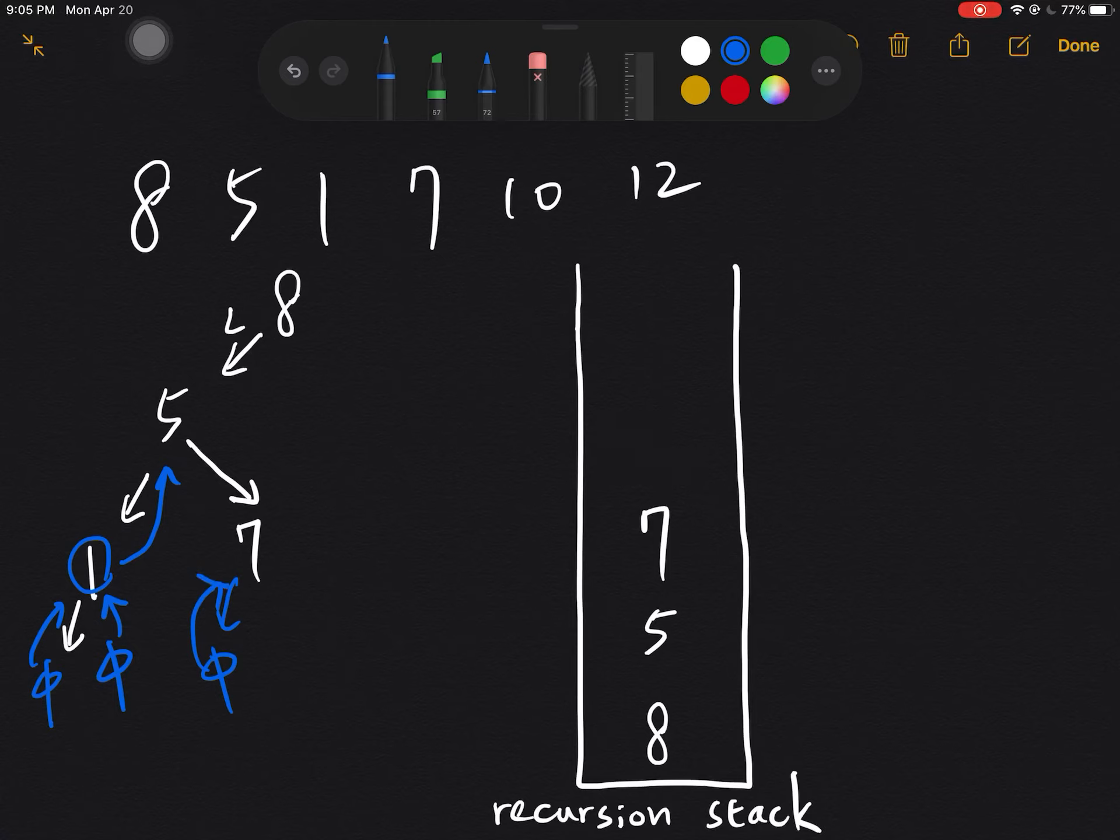7 left pops out and then 7 right which is still null, and then 7 right pops out. Then 7 returns to 5, and finally all of 5 has been done so 5 returns to 8. Sorry, before that, 7 will pop out first and then 5 will pop out and return to 8.